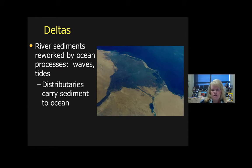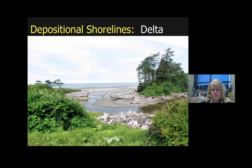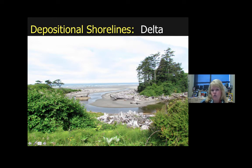Deltas are river sediments that get reworked by waves as a river enters a water body like an ocean, carrying sediment in the form of terrigenous material. This is a delta I saw in Olympic National Park — for fans of Twilight, this is near Forks — where water is feeding into an ocean and making deltaic deposits.